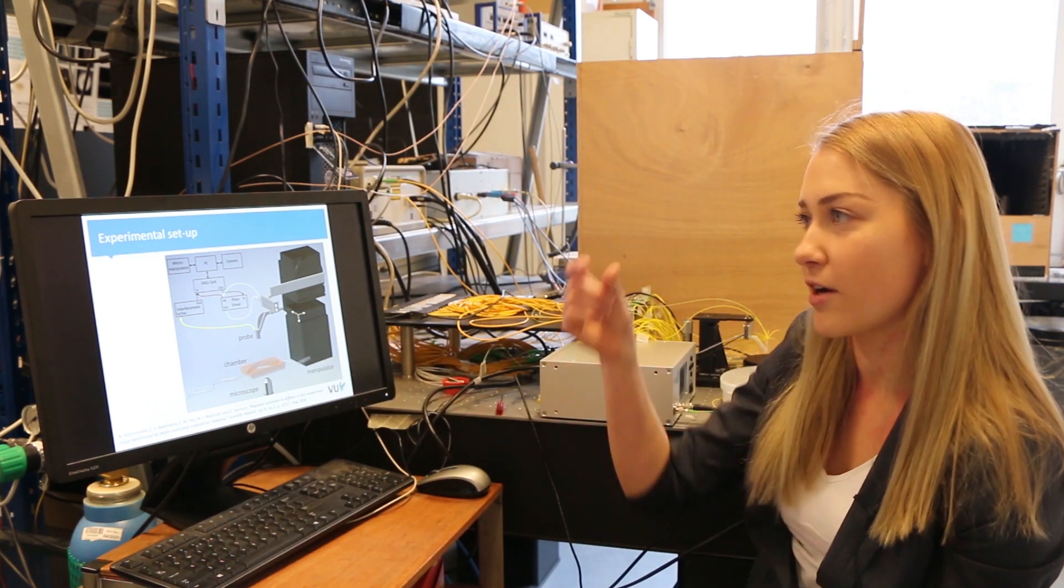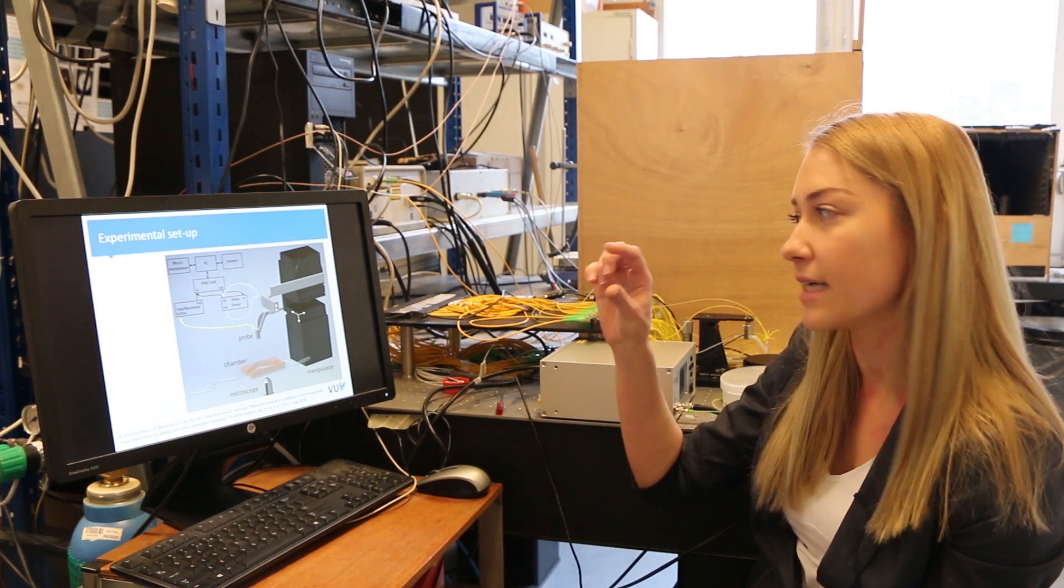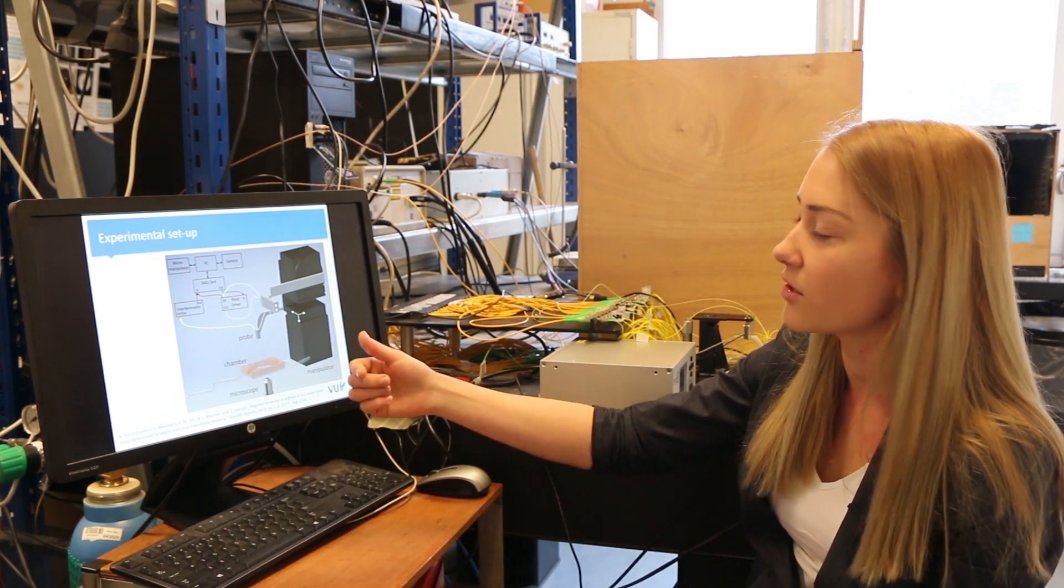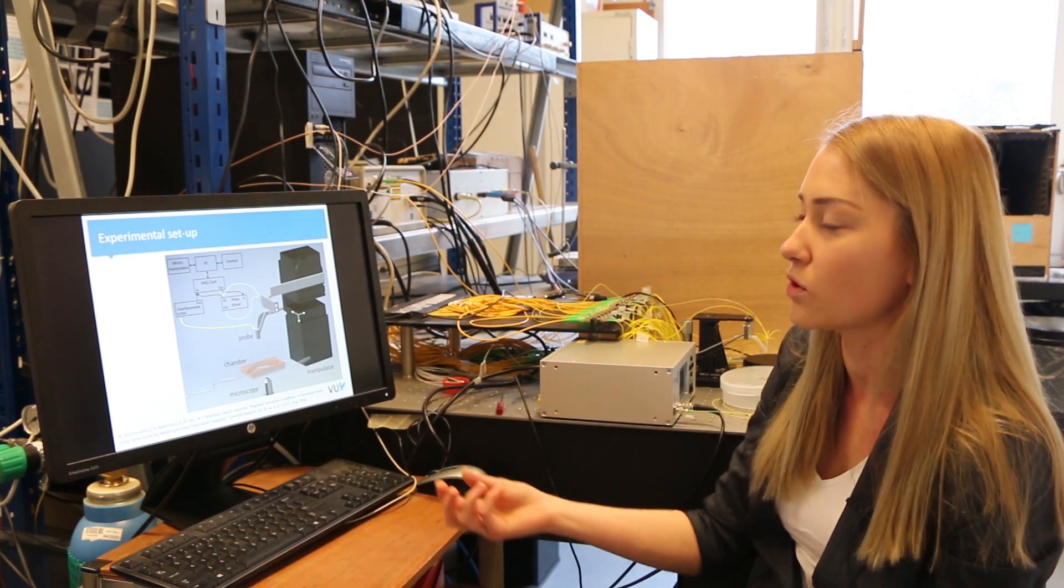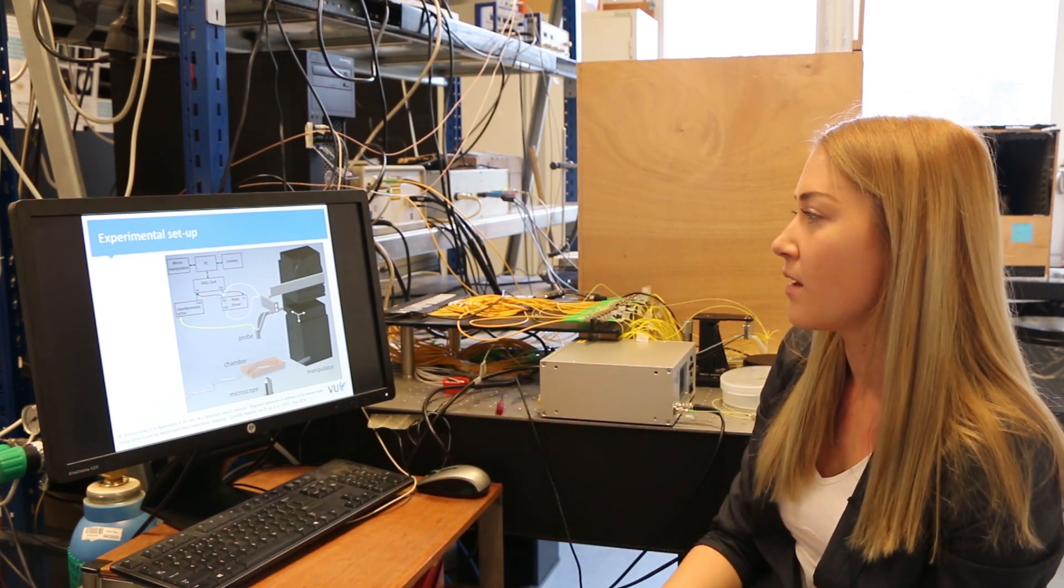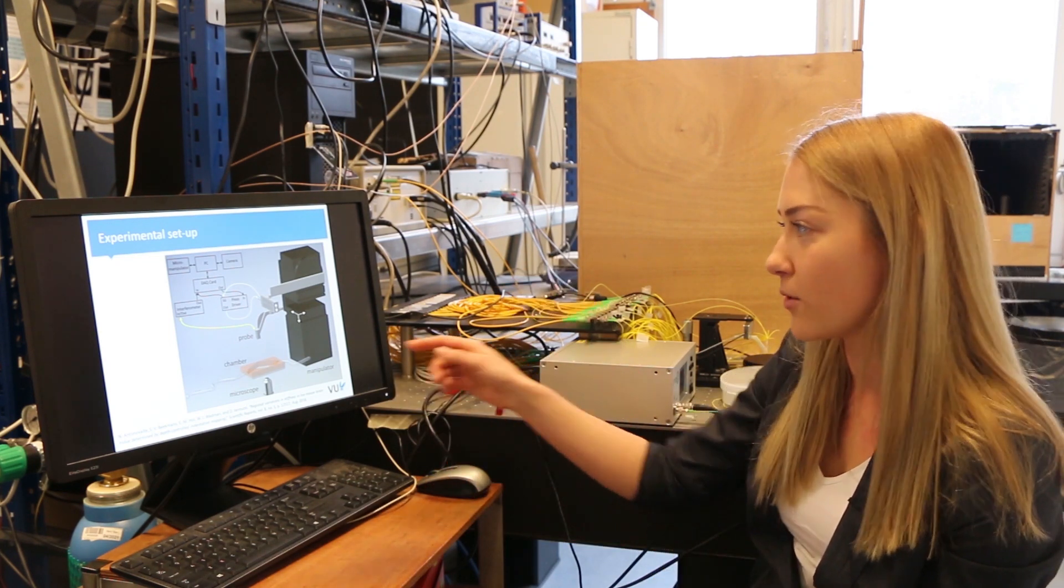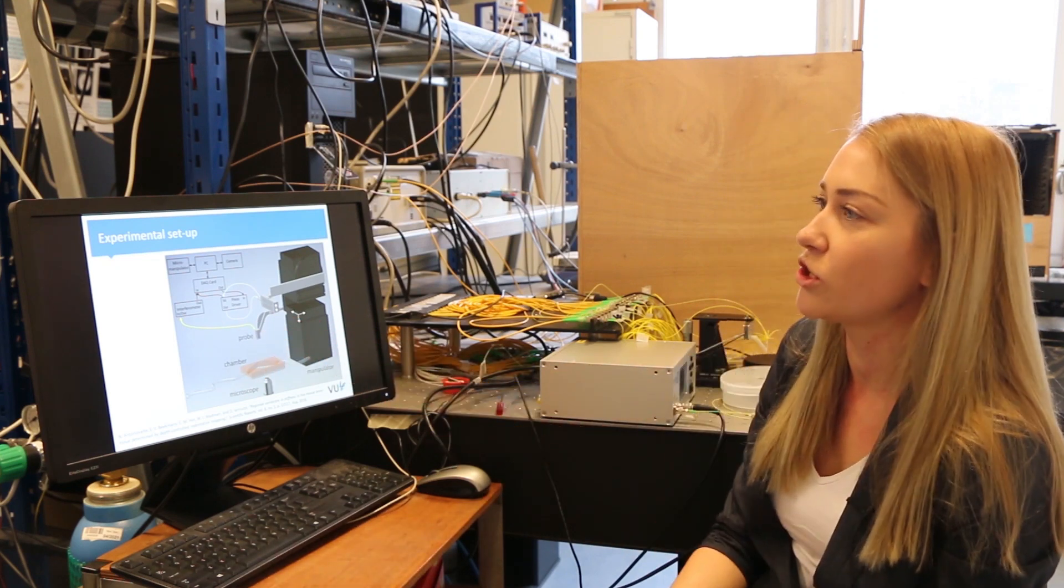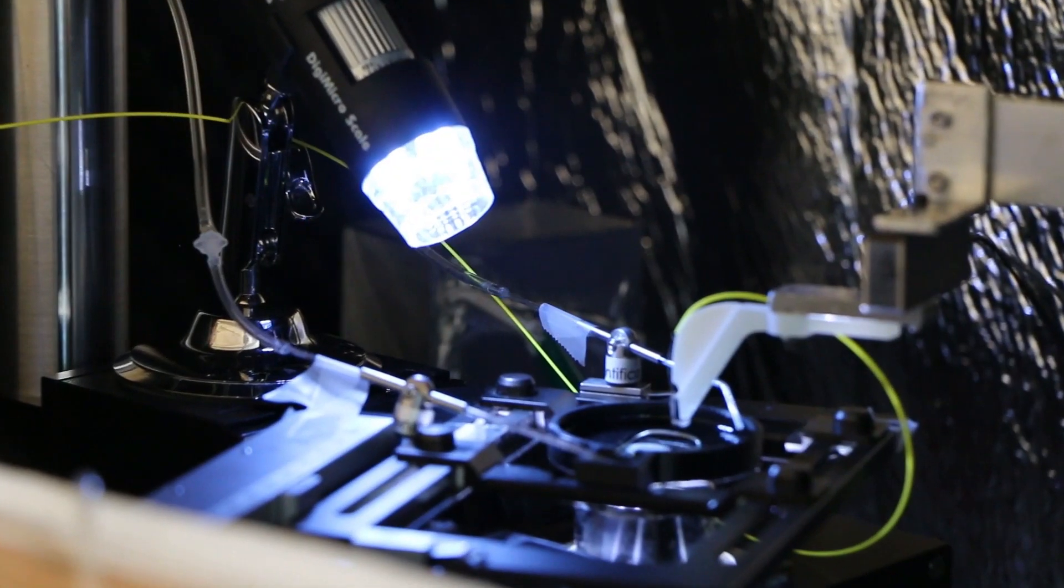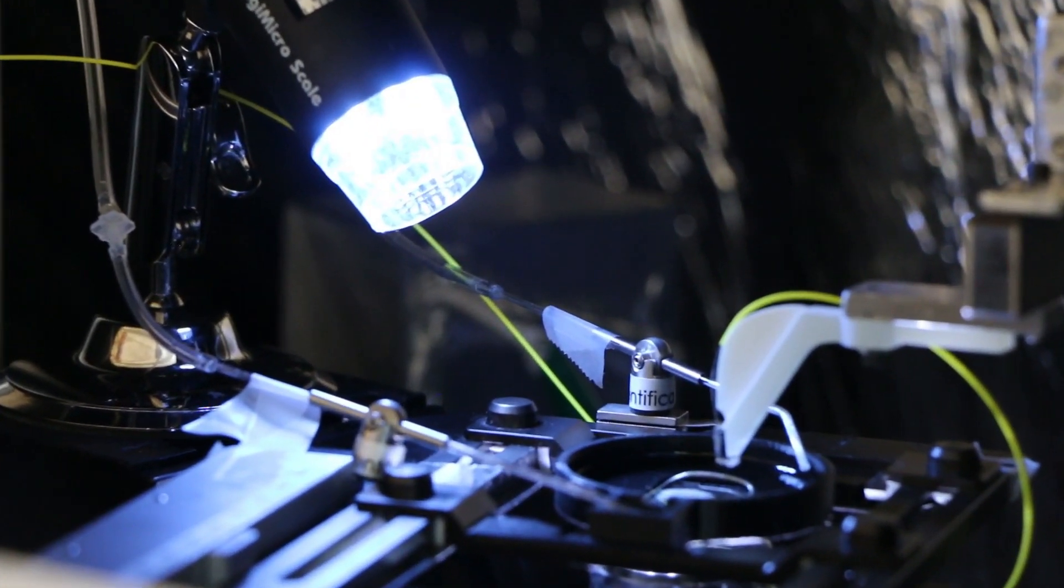It has a ferrule, it's a piece of glass with the cantilever at the end and also the sphere at the tip. And then you have an optical fiber over here which reads out the position of the cantilever. So when it's bending you see how much it's bending.